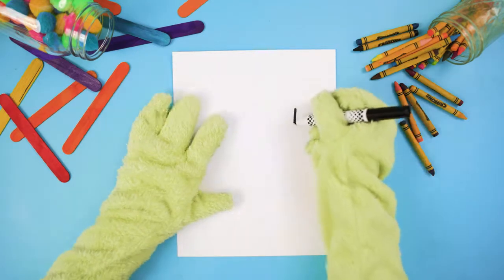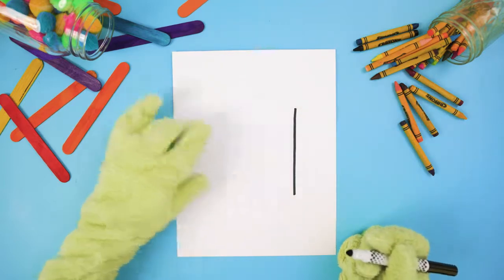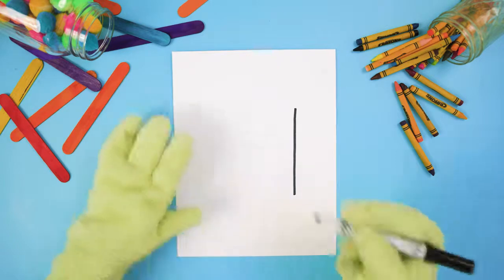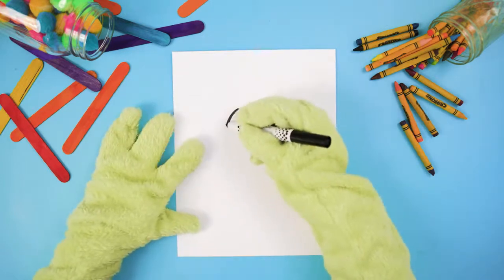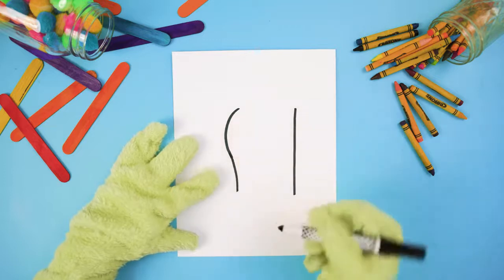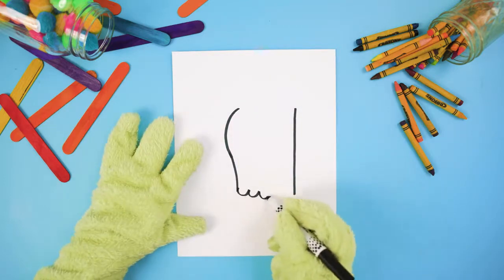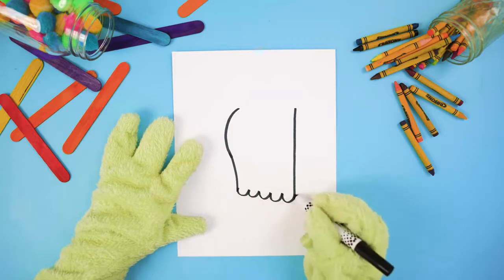So first we're gonna draw a straight line down on the right side of the paper to make his face. Now on the left let's make a curved line going down. Then connect the two lines on the bottom with a few bumps. Okay, a lot of bumps like that.